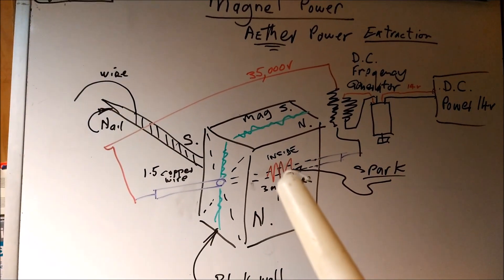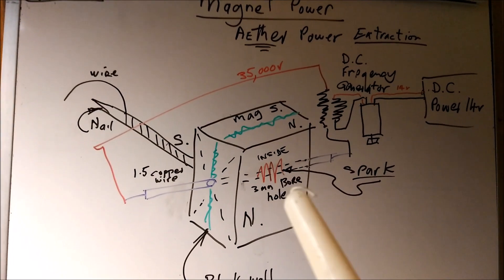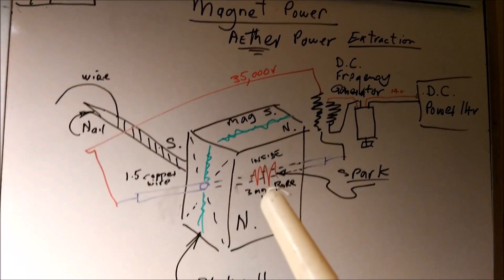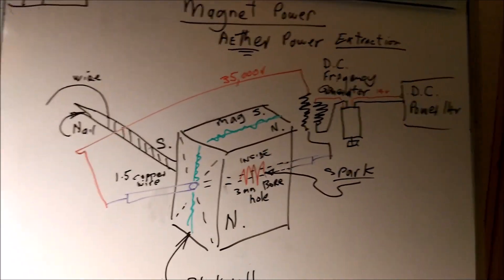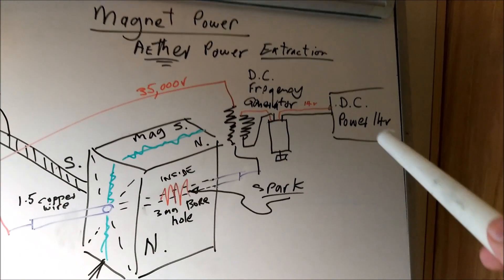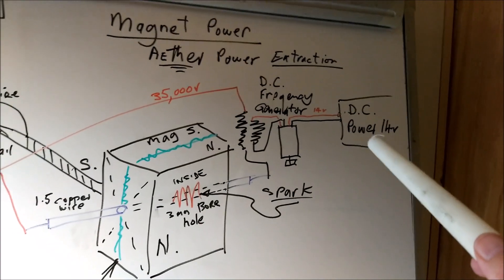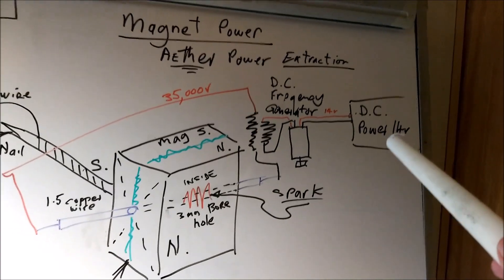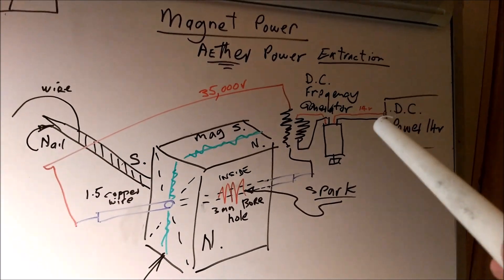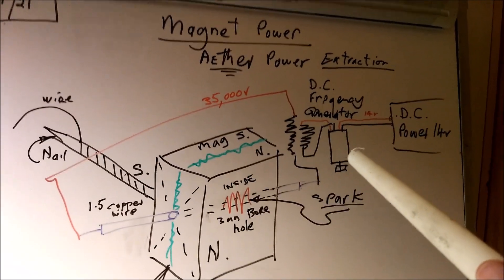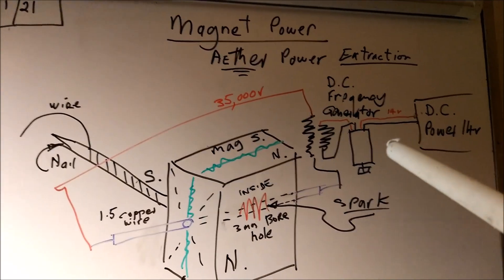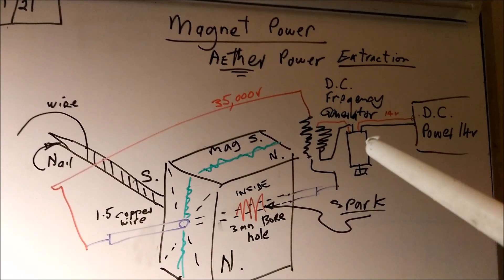There's a spark and I'm very excited. So if we go from the start, we've got a DC power unit which is delivering about 14 volts, and from there we go to a frequency DC modulator.